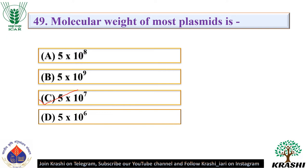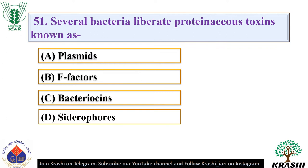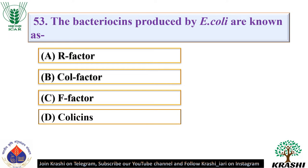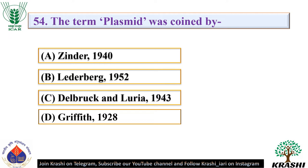Question number 50: Molecular weight of bacterial R factor is. The correct answer is option A — 1 × 10⁷. Question number 51: Several bacteria liberate proteinaceous toxins known as — they are called bacteriocins. Question number 52: Bacteriocins are active against — they are active against closely related strains. Question number 53: The bacteriocins produced by E. coli are known as — they are known as colicins. Question number 54: The term plasmid was coined by — it was coined by Lederberg in 1952.